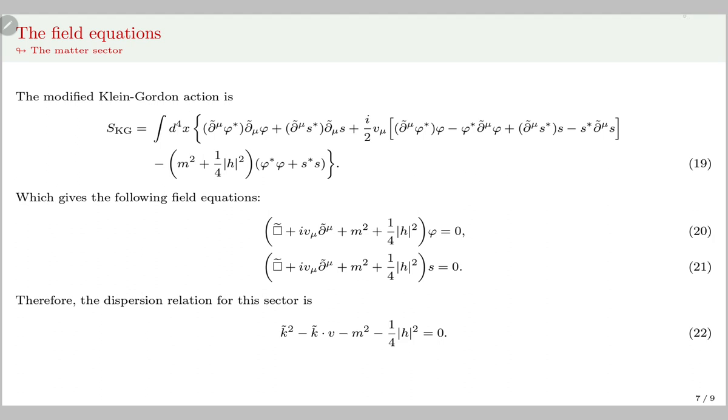The modified Klein-Gordon equations are in 20 and 21, and the modified dispersion relation for this sector is in 22.